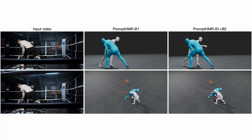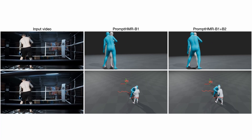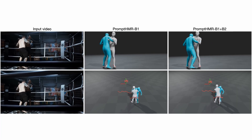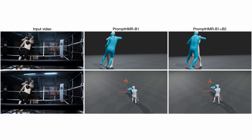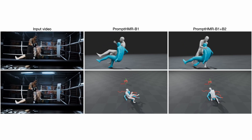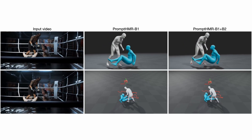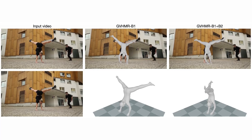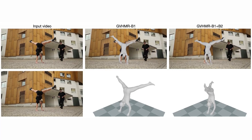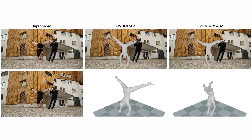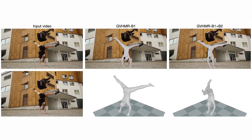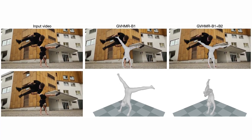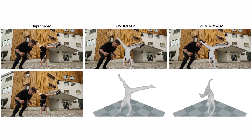The Bedlam 1 and 2 model more reliably estimates poses of occluded subjects. Similarly, GVHMR trained on Bedlam 1 and 2 better recovers the gymnast's leg pose.